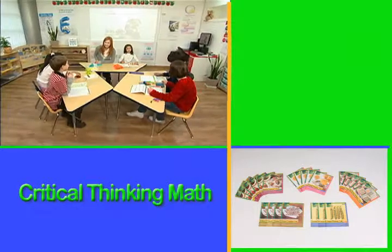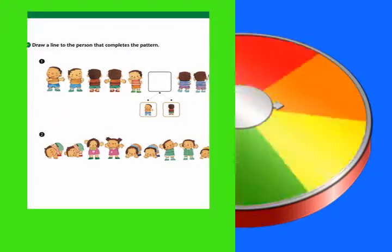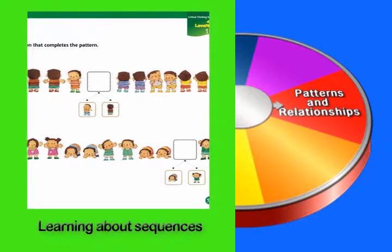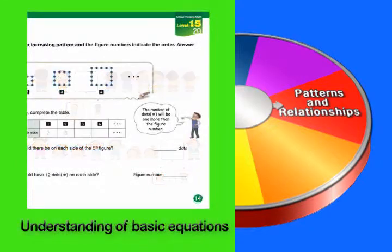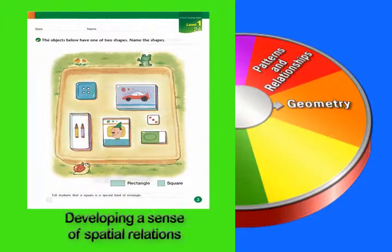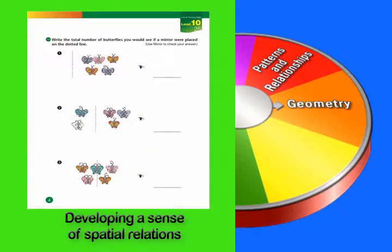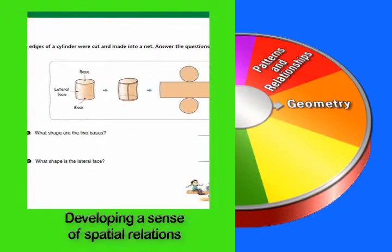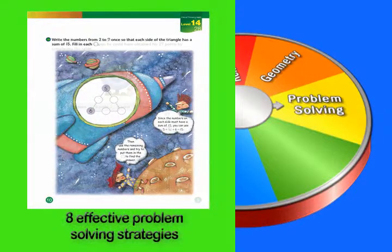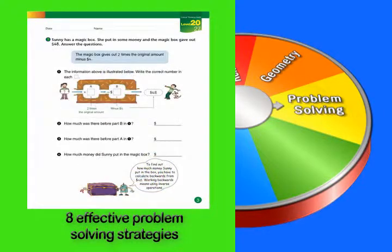We will take a look at the critical thinking math lessons by section. Students will learn about sequences and develop an understanding of basic equations in the Patterns and Relationships section. Students will develop an intuitive sense of spatial relationships by using manipulatives in the Geometry section. Eight effective problem-solving strategies will be introduced in the Problem Solving section.